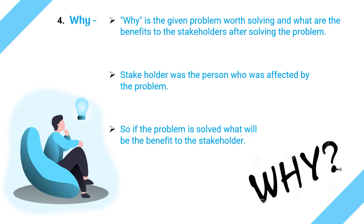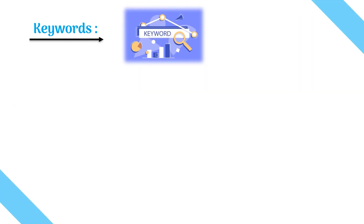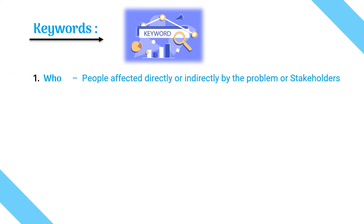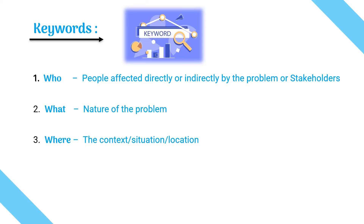These can appear as match-the-following or one-word questions in exams, so here are the keywords to remember: associate 'who' with people affected directly or indirectly by the problem, or stakeholders. Associate 'what' with the nature of the problem. Associate 'where' with context, location, and situation. Associate 'why' with why the problem is worth solving, or benefits of the solution, or benefits to the stakeholder.